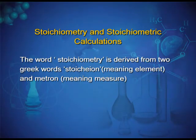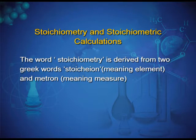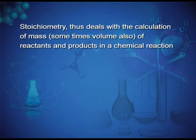The word stoichiometry is derived from two Greek words: stoicheion meaning element and metrion meaning measure. Stoichiometry thus deals with the calculation of mass, and sometimes volume also, of reactants and products in a chemical reaction.